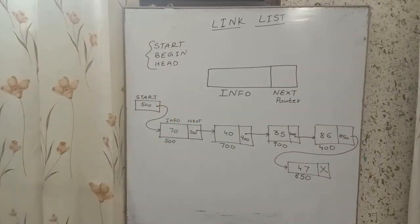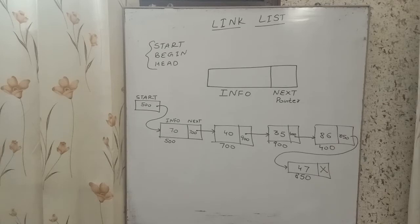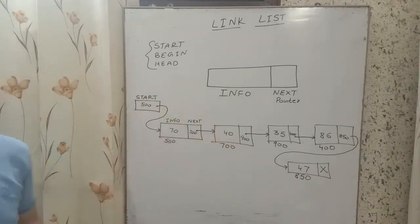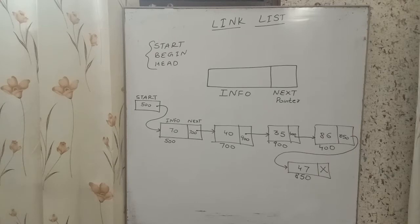Because the last node's next part contains null, and traversal goes in only one direction, this type of arrangement is known as a one-way linked list.